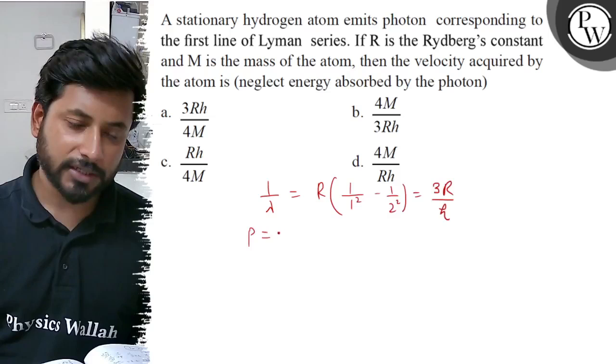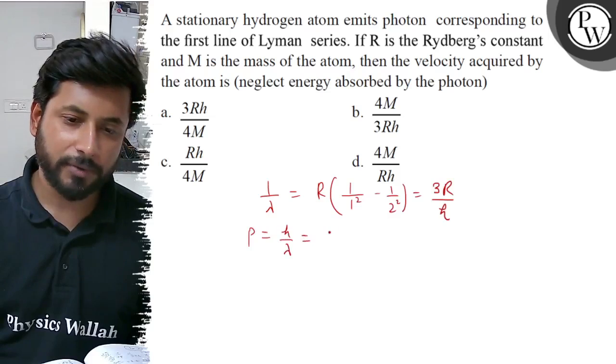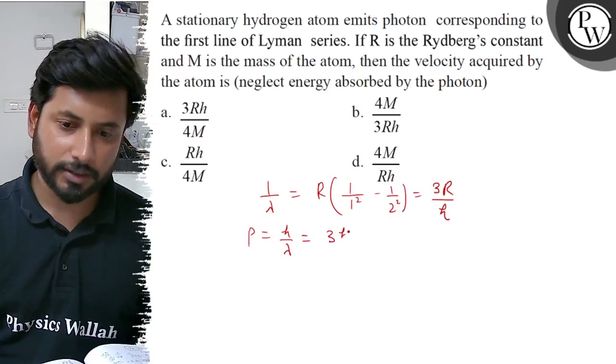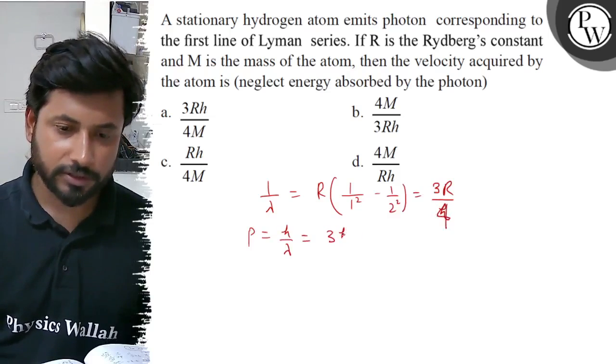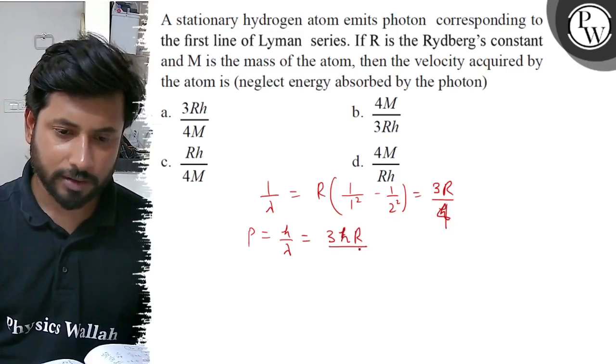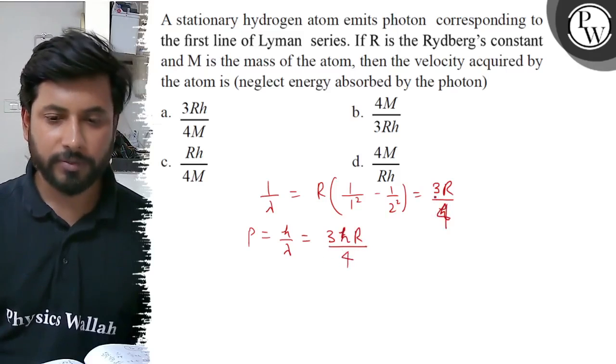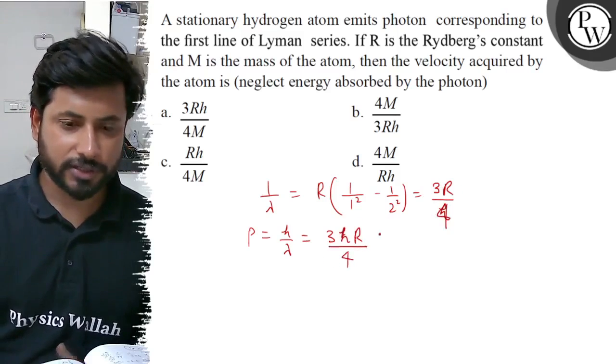Now we can find momentum. Momentum is h by lambda. Here will be 3Rh by 4. And 1 by lambda value is 3R by 4, then momentum is 3hR upon 4.